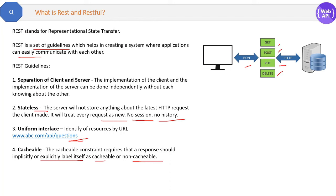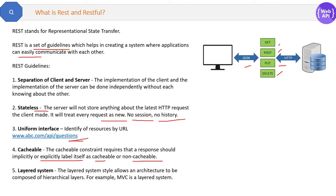Fourth guideline is cacheable. The cacheable constraint requires that a response should implicitly or explicitly label itself as cacheable or non-cacheable. When the client sends a request to the WebAPI for any data, the response should also mention whether this response is cacheable or not. The fifth and last guideline is it should be a layered system. The layered system allows an architecture to be composed of hierarchical layers — for example, MVC is a layered system.